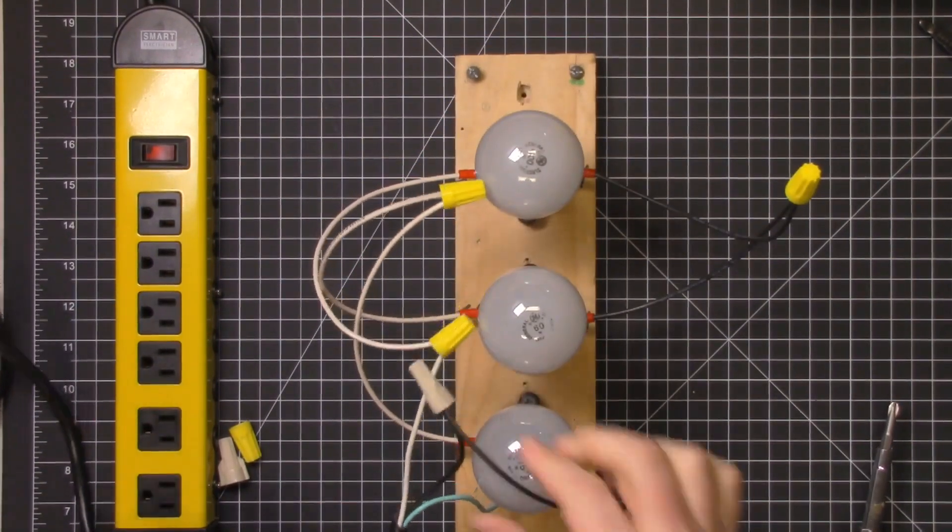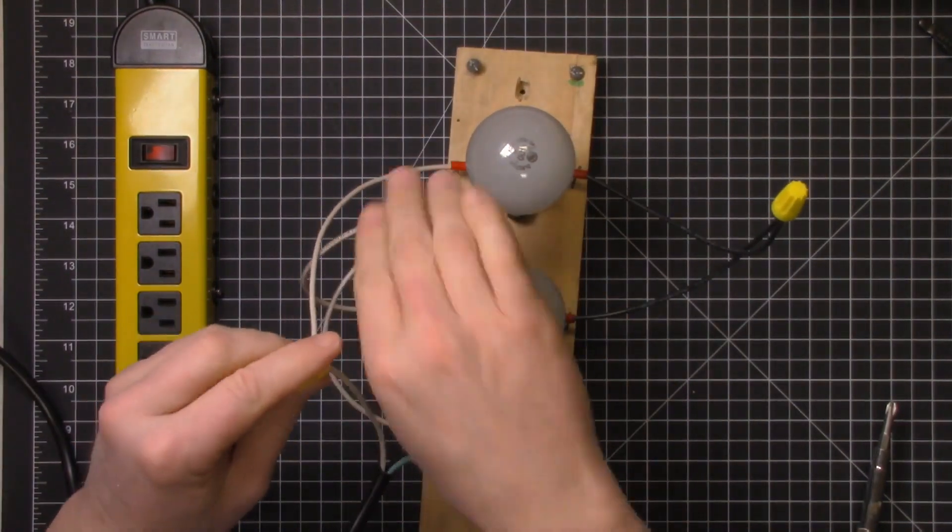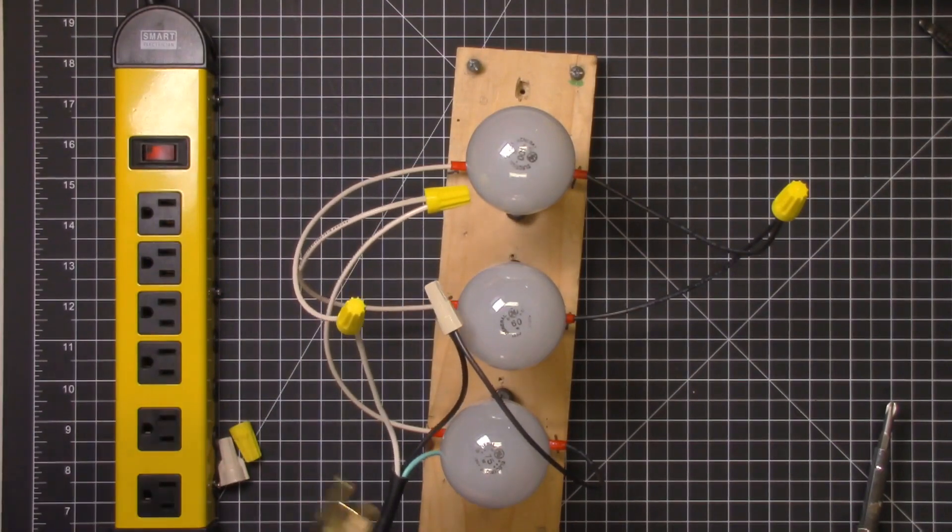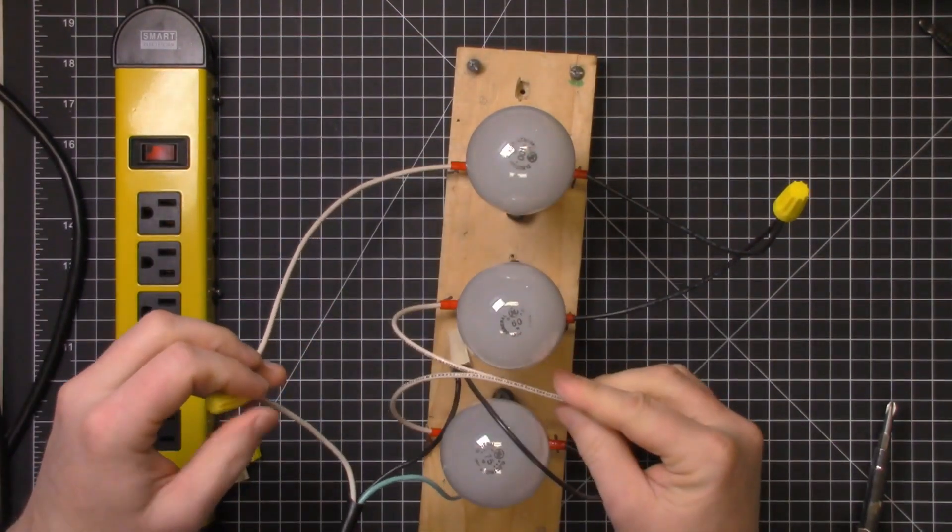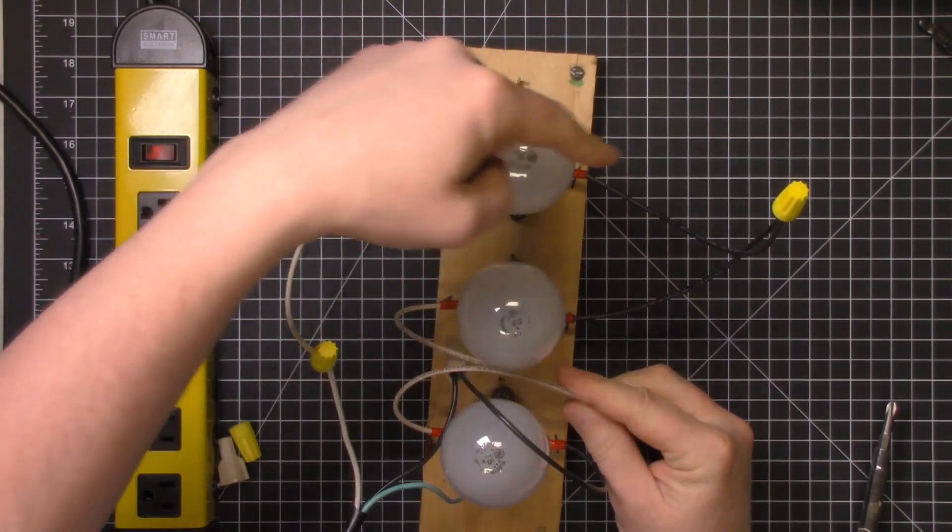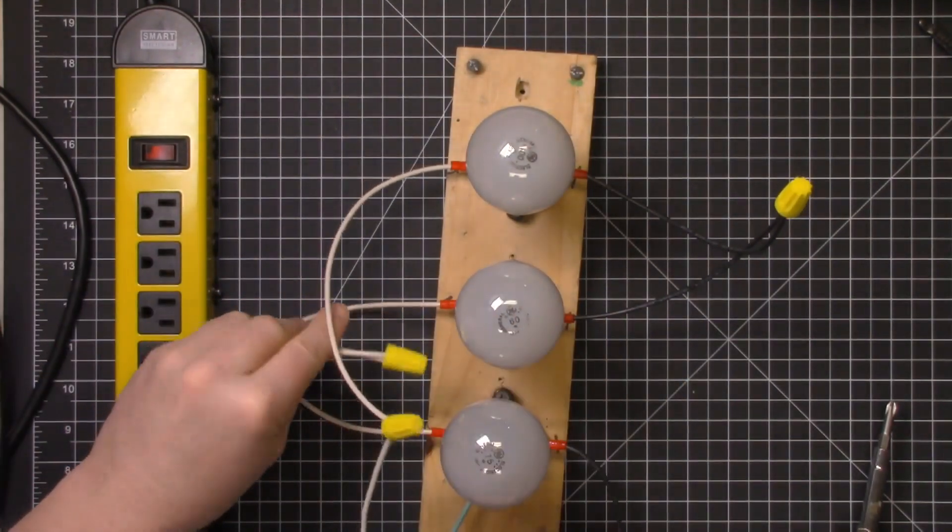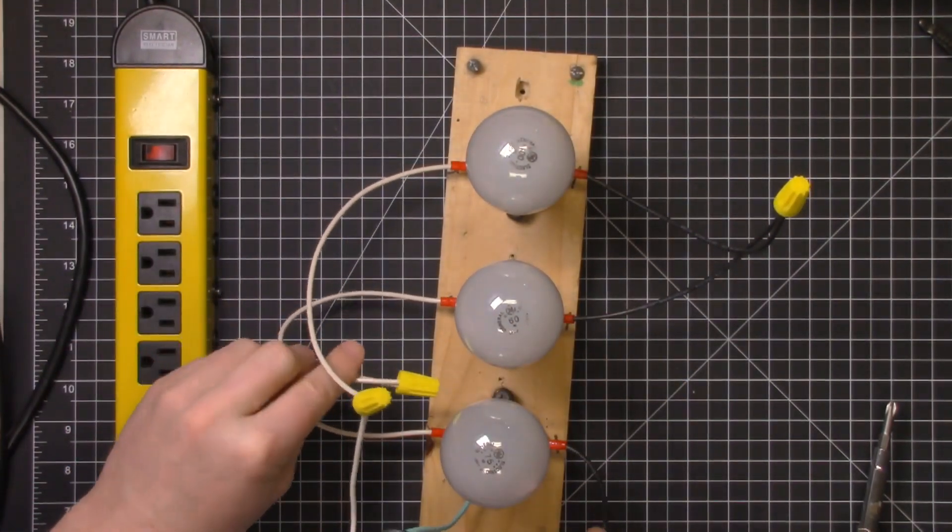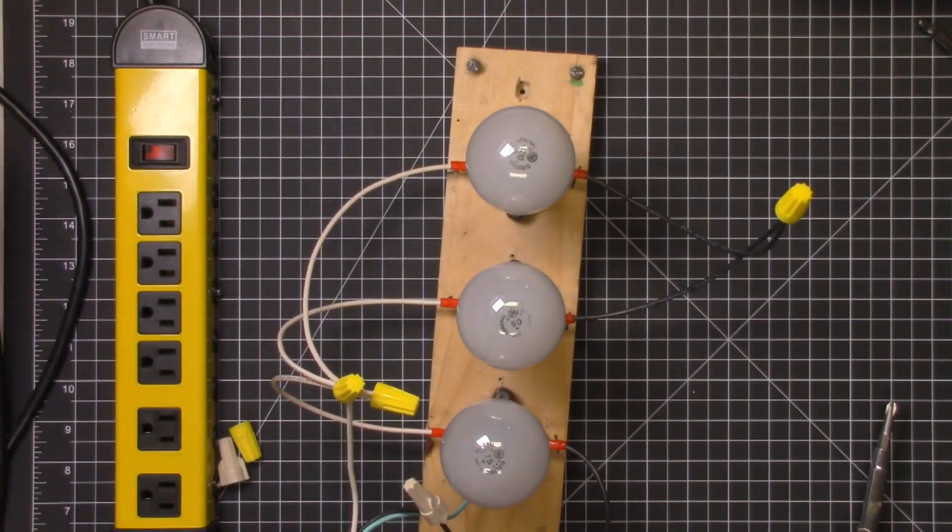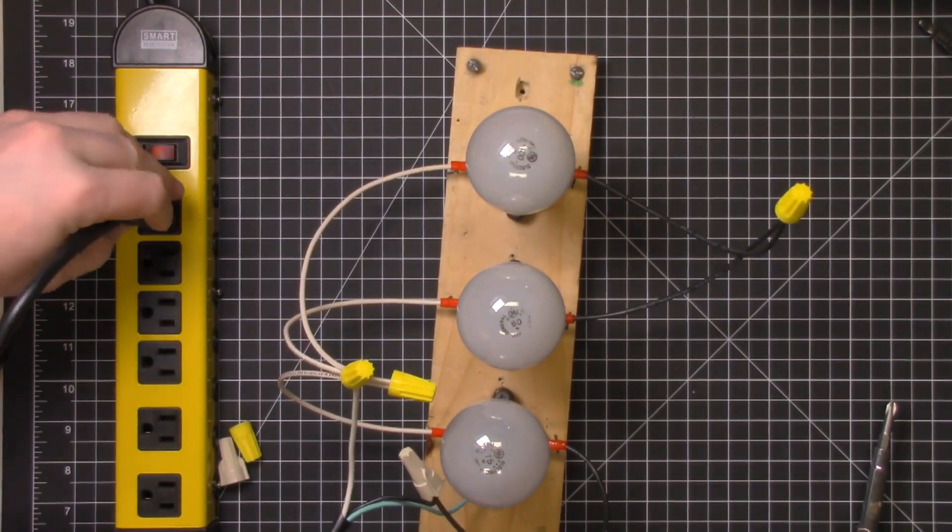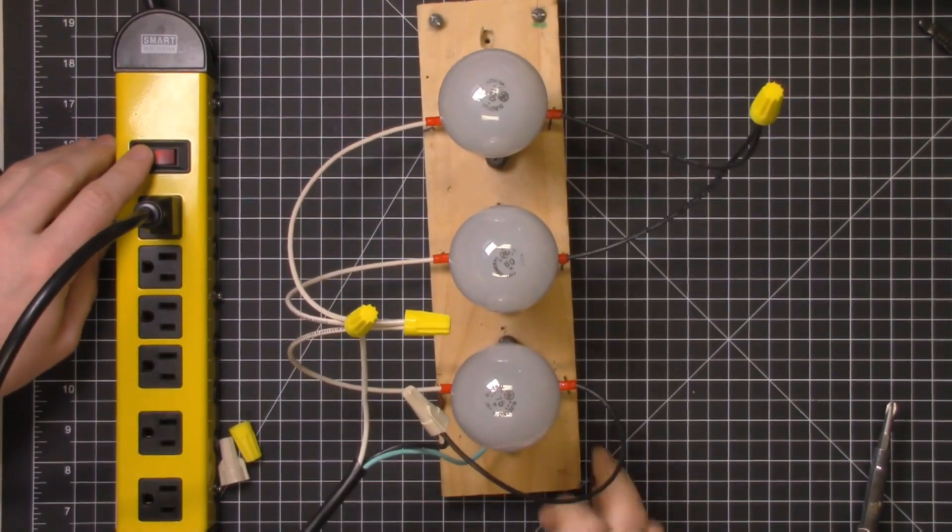So at this point, the electricity is coming in from our power outlet and going in through this light bulb, then the electricity has to go through the next light bulb, through the next and then out, so it's going like so until it returns to the source. So I'm going to go ahead and plug this in and we'll power it up and see what we get.